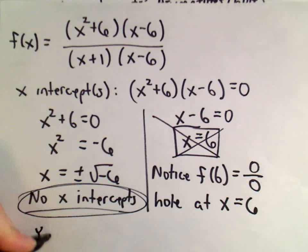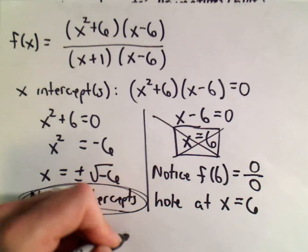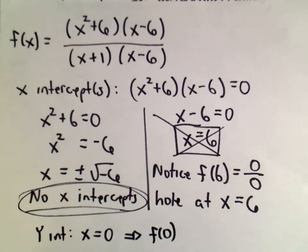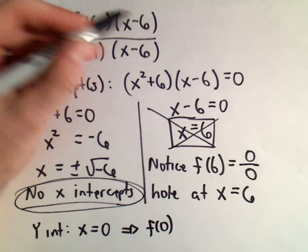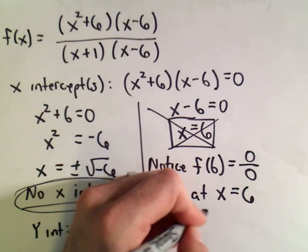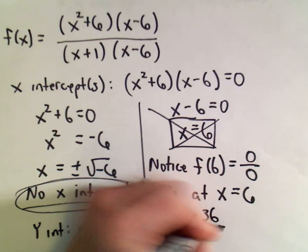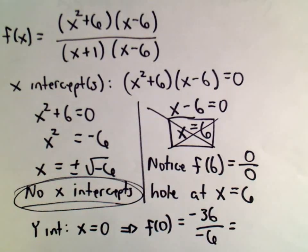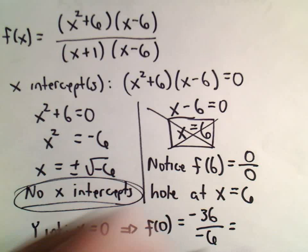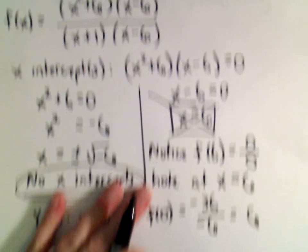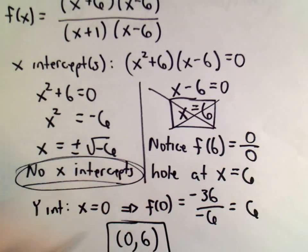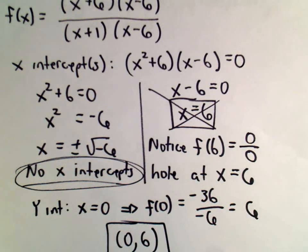To get the y-intercept, we plug in x equals 0. That gives us 6 times negative 6, which is negative 36 in the numerator, and 1 times negative 6 in the denominator. Negative 36 over negative 6 is positive 6, so the point (0, 6) is on the graph.